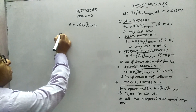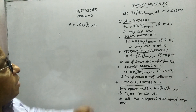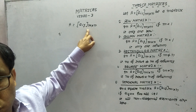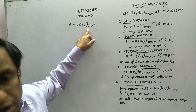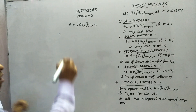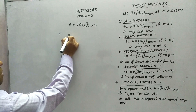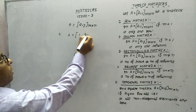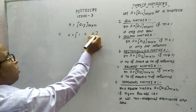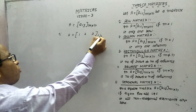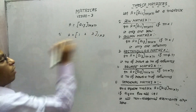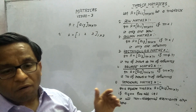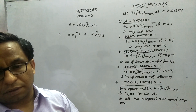Number 1: row matrix. In a row matrix, M should be equal to 1, meaning there should be only one row. Example: [1, 2, 3] — how many rows? 1. How many columns? 3. There is no restriction on the number of columns.